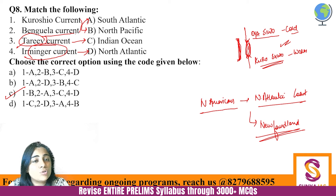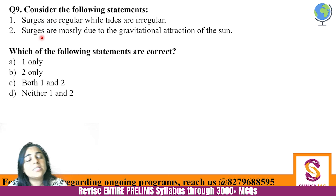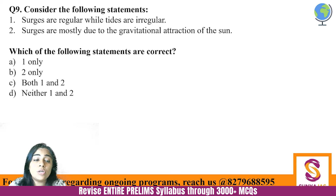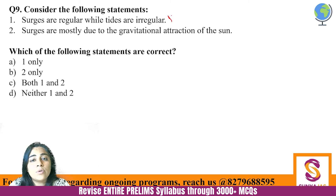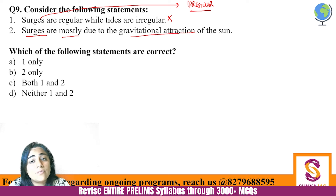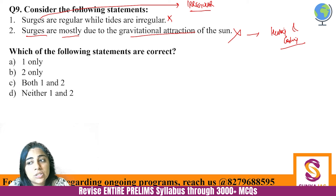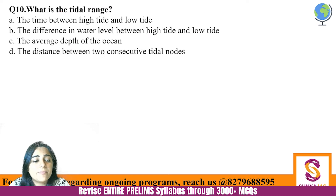Next: surges are regular while tides are irregular; surges are mostly due to the gravitational attraction of the sun. Both statements are incorrect. It is actually tides that are very regular and predictable, while surges are irregular — they happen only during stormy weather. Surges are caused by differential heating and cooling and differential pressure conditions of water, not by gravitational attraction of the sun. So neither statement one nor statement two is correct.